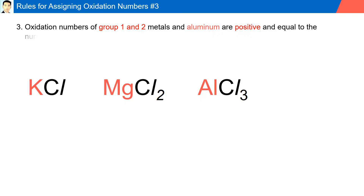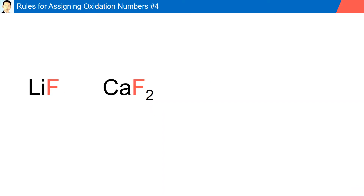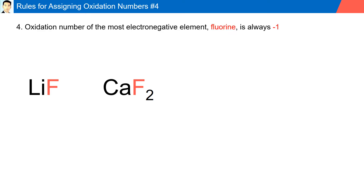Rule number three: oxidation numbers of Group 1, Group 2 metals, and aluminum are positive and always equal to the number of their valence electrons when bonded to other elements. For example, potassium (K), found in Group 1, is always plus one; magnesium, found in Group 2, has an oxidation number of plus two; while aluminum, found in Group 13 with three valence electrons, has an oxidation number of plus three.